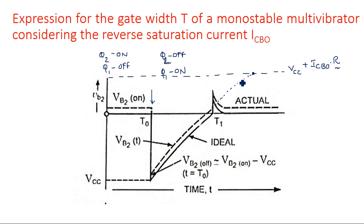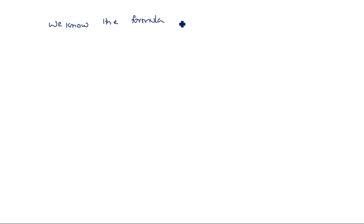Except for this change in the final value, everything else is the same as the previous video. We use the standard capacitor charging equation: V_out = V_final − (V_final − V_initial) × e^(−T/τ). We apply this at base 2 of the transistor. So VB2 = V_final − (V_final − V_initial) × e^(−T/τ), where the new V_final is VCC + ICBO × R.